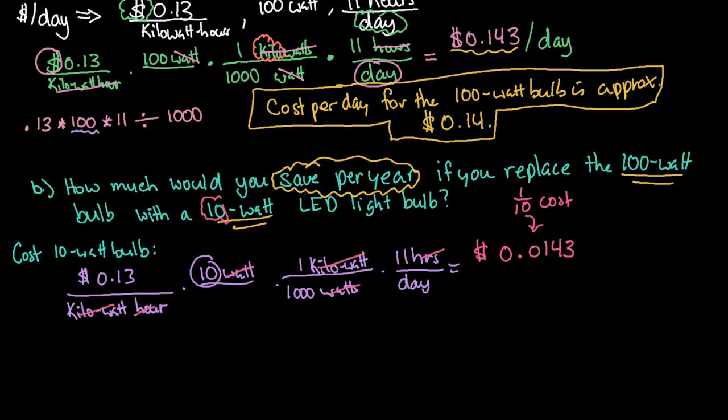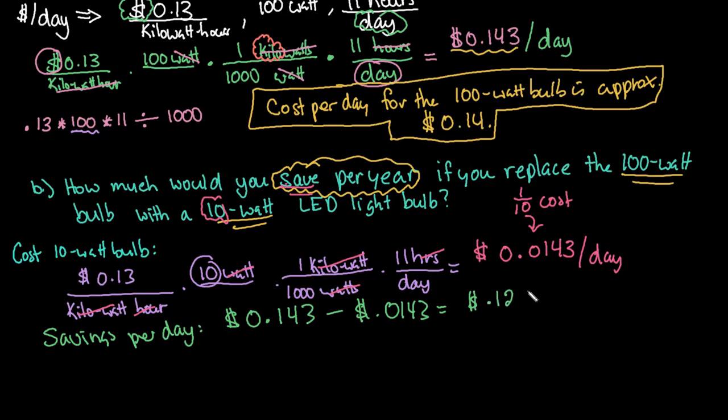Be careful to solve for what they're asking for. They're not asking what is the cost per day. They are wanting to know what are our savings per year. So our next step is to find the savings per day. So we know that if we use the 100-watt bulb, it costs us 14 cents per day. And then we're going to subtract from it the cost of the 10-watt bulb. And we can see that per day, we are saving approximately almost 13 cents. So 0.1287 per day in savings.